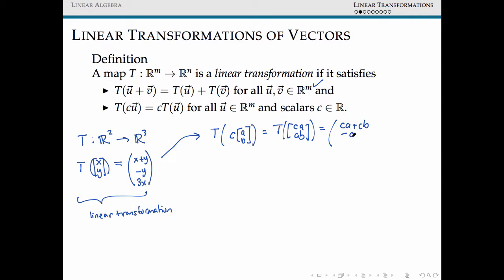So that's ca plus cb, the negative of our second coordinate, so minus cb, and 3ca, three times our first. In the other direction, if we'd begun with c times T(a, b), this is just directly c times (a + b, -b, 3a). So that's ca plus cb, negative cb, and 3ca.